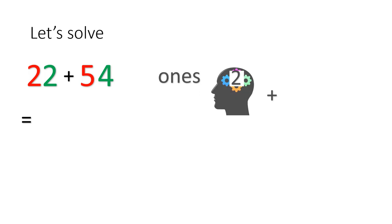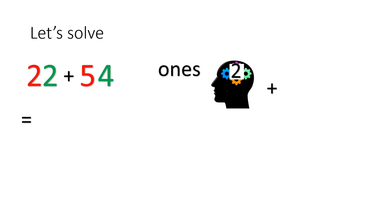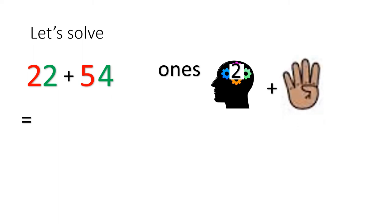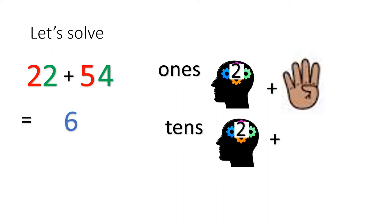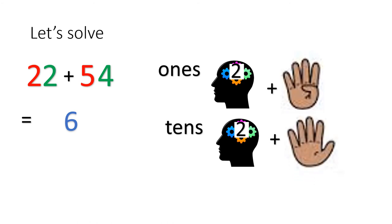Now let's solve 22 plus 54. Look at the 1s: put 2 in your head and 4 on your fingers. Let's count the number after 2: 3, 4, 5, 6. And then for the tens you write 7. So the answer is 76.